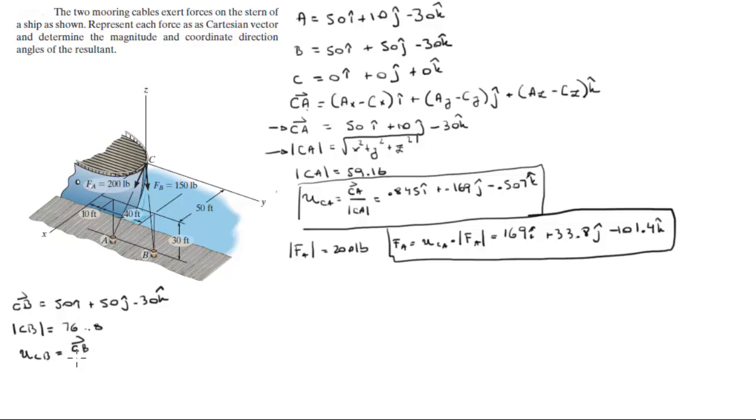Unit vector CB can be found by dividing the vector over the magnitude, and it comes out to be 0.651i plus 0.651j minus 0.390k.